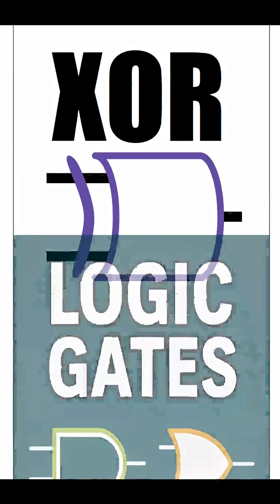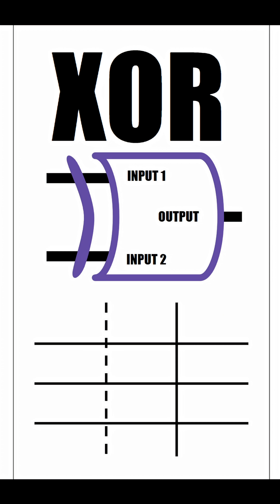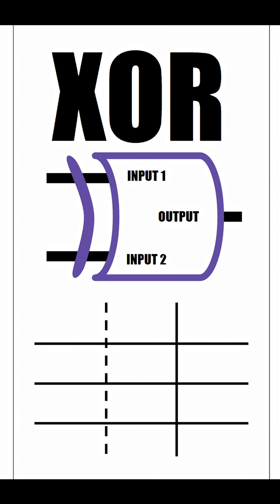So let's look at the XOR gate. The XOR gate has two inputs and one output, meaning that we will input a total of two bits. We can represent this by using a truth table, which has two columns for inputs and one column for our outputs. So let's write every possible combination of inputs: 1 1, 0 1, 1 0, and 0 0.